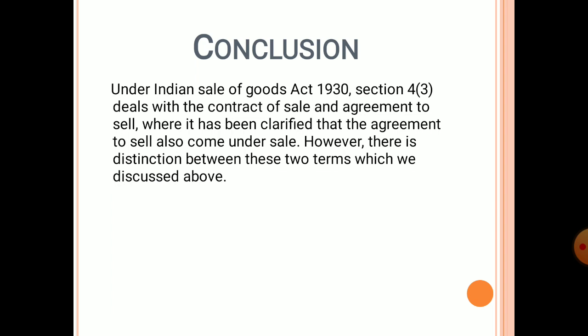In conclusion, under the Indian Sale of Goods Act 1930, Section 4 deals with the contract of sale and agreement to sell, where it has been clarified that the agreement to sell also comes under sale. However, there is a distinction between these two terms, as discussed above.